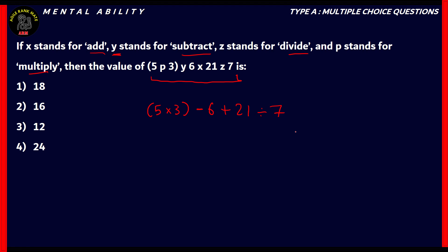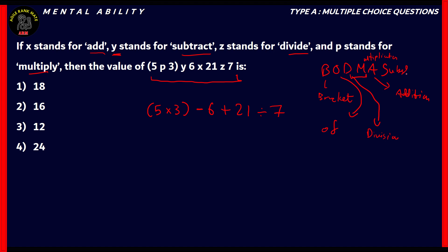To solve this question we need to understand the BODMAS rule for arithmetic operations. B stands for Bracket — always solve the bracket first. O means 'of' (multiply). D stands for Division, M stands for Multiplication — these are coupled together. A stands for Addition, and S stands for Subtraction.